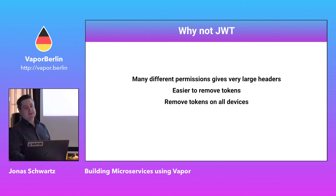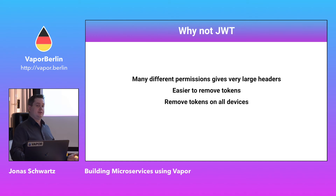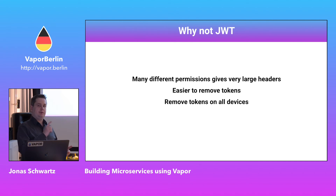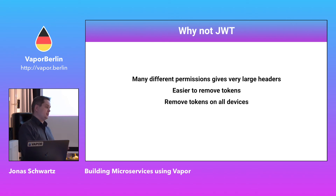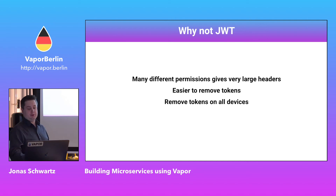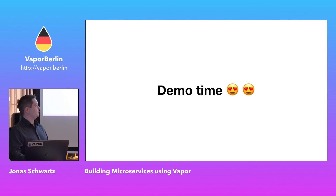With our token solution, we can easily handle this — if you change your password or log out, we can log you out from every single account you're logged in with, because each sign-in has its own token. So if you're logged in through an iOS app, the raw API, and the dashboard, when you log out in one place, we can allow you to log out everywhere. If you change your password, you're logged out everywhere. This is really easy to do with our token solution.